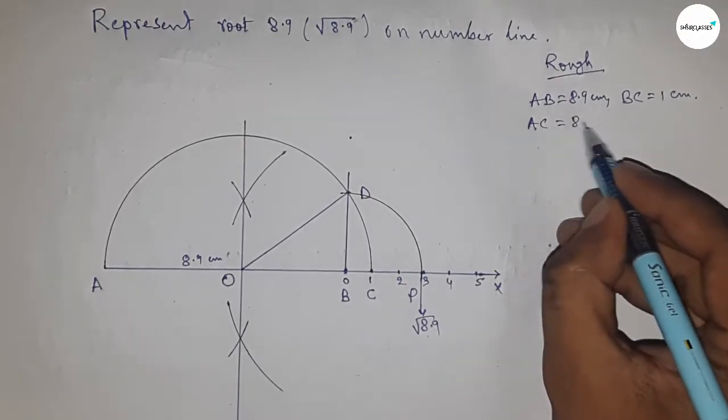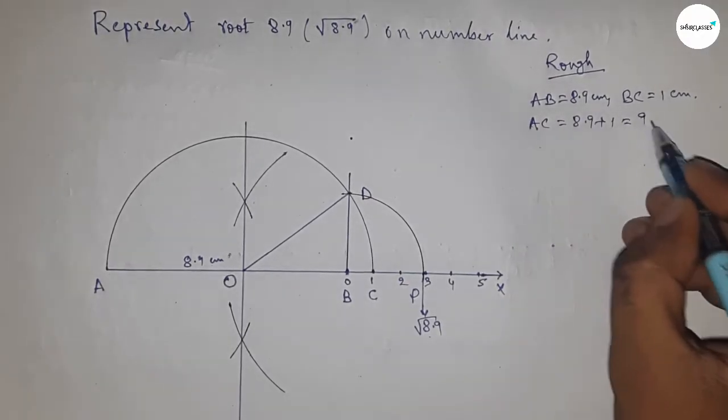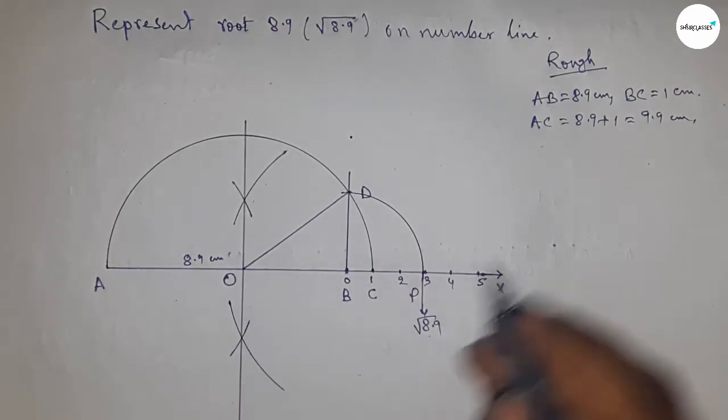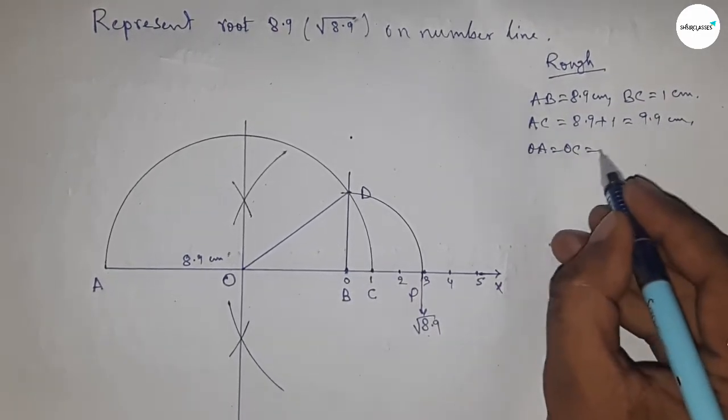So AC equals 8.9 plus 1, which is 9.9 centimeters. Now radius OA, OC, and OD equal 9.9 by 2 centimeters.